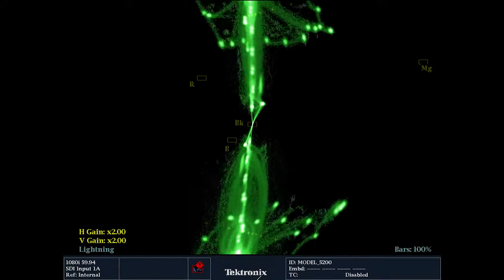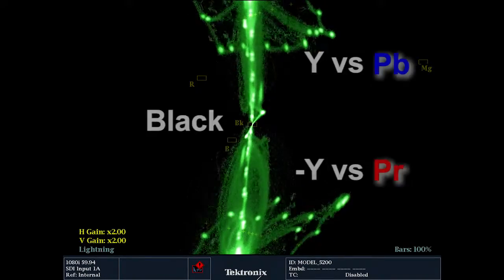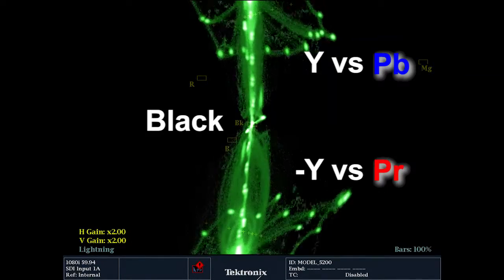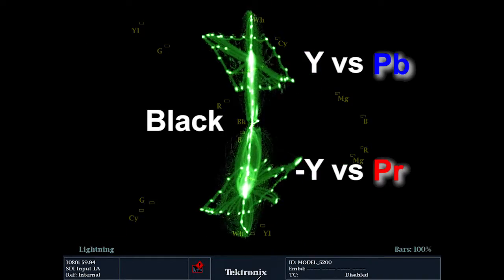If adjustment is required in the upper part of the display, this is Y+PB components. And for the lower part of the lightning display, Y+PR adjustments can be made.